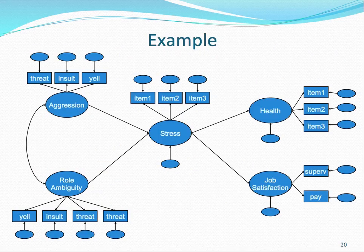Here again is our example from the beginning—a latent variable path analysis where latent variables are represented by ellipses, each represented by various observed variables and their associated error terms. We have the correlation still existing between aggression and role ambiguity.